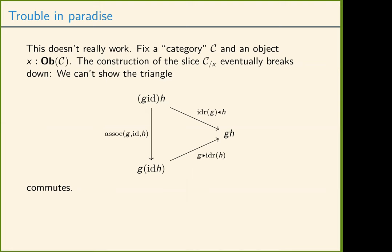The solution is to say that a category has a set of morphisms. This way, the triangle automatically commutes, because it's a triangle of paths in a set. By definition, parallel paths in a set are all equal. So when your category has a set of morphisms and you're proving identity between morphisms, it doesn't matter how you do it. In the OneLab, we mostly leave them abstract so that a term exists, but you can't see which term it is, because by definition of category, what terms those are don't matter.